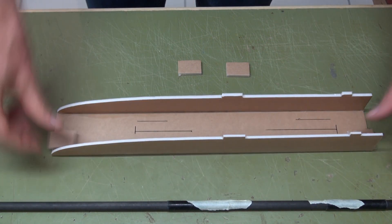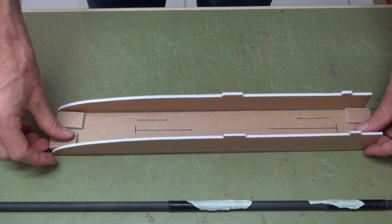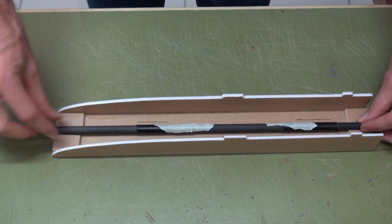To ease the centering of the tubes, I recommend cutting four pieces of foam board, just leaving enough space in the middle for the carbon fiber tube.